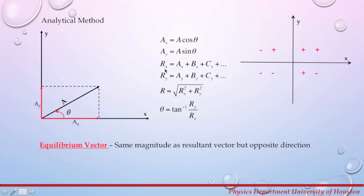To find the resultant, the x-component of the resultant is the sum of the x-components of the individual vectors, and the y-component of the resultant is the sum of the y-components. To find the magnitude of the resultant, take the square root of the sum of the squared components. The magnitude will always be a positive number because squaring gives a positive number, adding another positive gives a positive, and the square root is also positive.